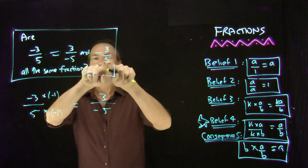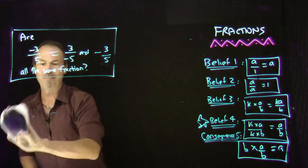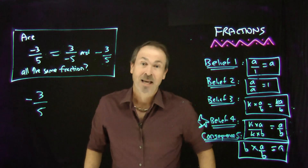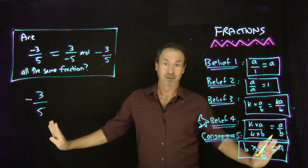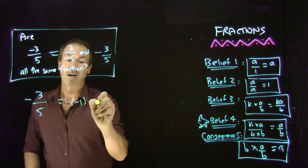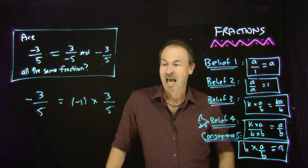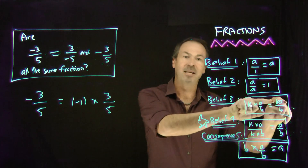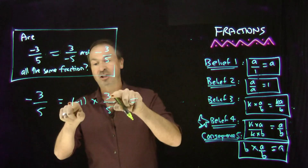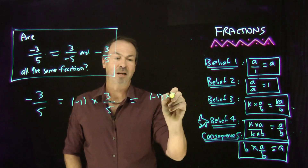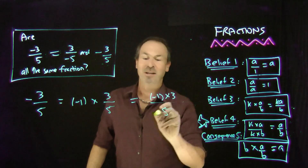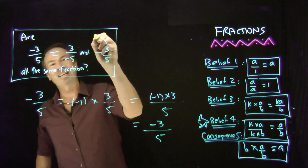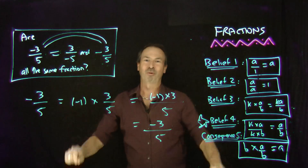Now can I get the third one — the negative of three-fifths — to equal one of those? One consequence of the basic mechanics of negative numbers is that a negative number is really the same as negative one times the positive version of that number. So the negative of three-fifths is negative one times three-fifths. And something times a fraction just means adjust the numerator appropriately. That gives negative one times three on top and five on the bottom — which is negative three-fifths — the first one. So this third one actually equals the first one, and the first one equals the second one. All three are actually equal.